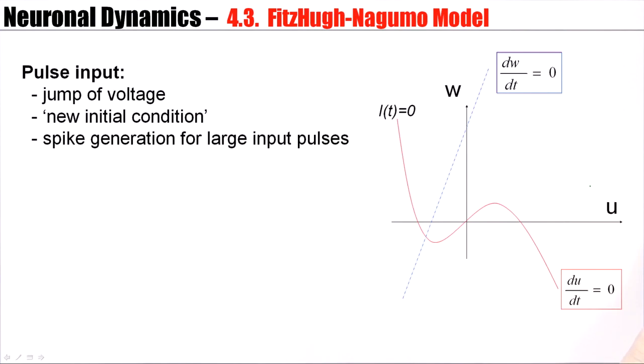Thus, we can understand the generation of action potentials in a two-dimensional neuron model. Action potentials will arise if the current pulse is sufficiently large. So this is my initial condition. If I make a large current pulse, the voltage trajectory will look like this. This corresponds to an action potential. This corresponds to a jump followed by an action potential.